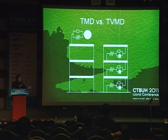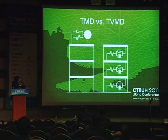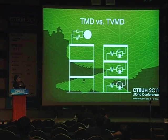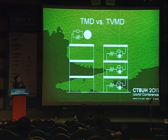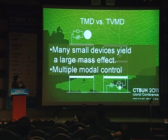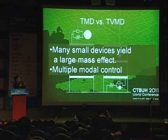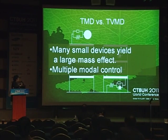This shows the comparison of the tuned mass damper control system and the tuned viscous mass damper system. In a tuned mass damper system, a very large mass is concentrated on the top of the building. In the tuned viscous mass damper system, very small actual masses are scattered throughout the building and are amplified by the ball screw mechanism. With multiple dampers, each tuned to specific modes, the system can provide multiple modal control.